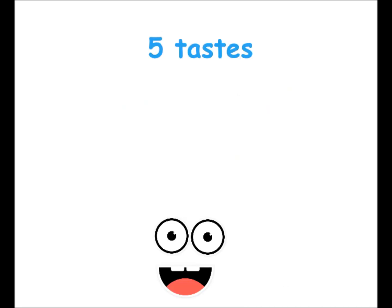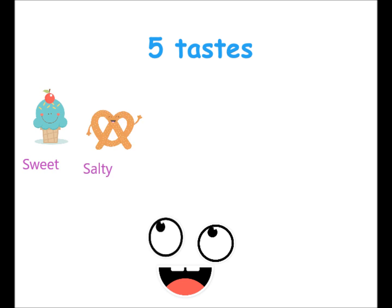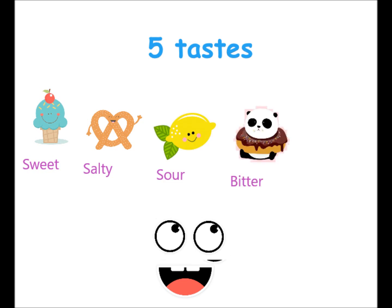There are five different tastes that we can sense. There's sweet, like from sugar and ice cream. There's salty, like from salt on a soft pretzel. Sour, like from a lemon. Bitter, like from dark chocolate. And then there's umami, like from a savory steak.